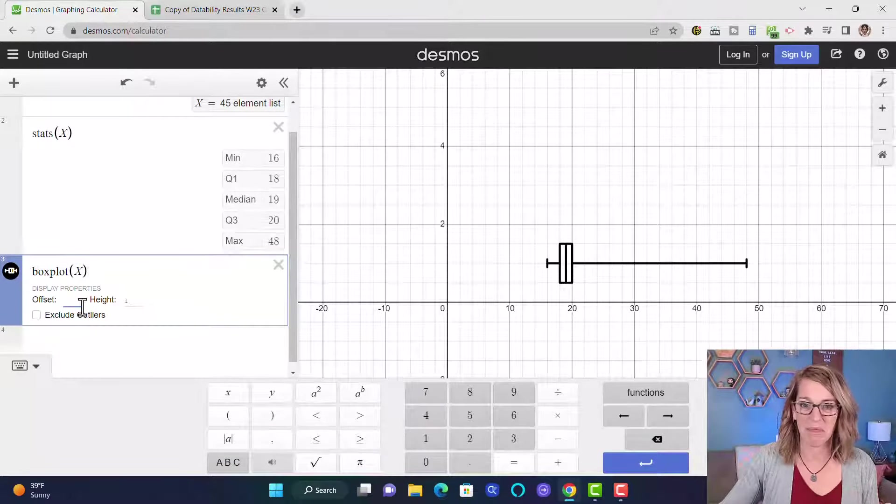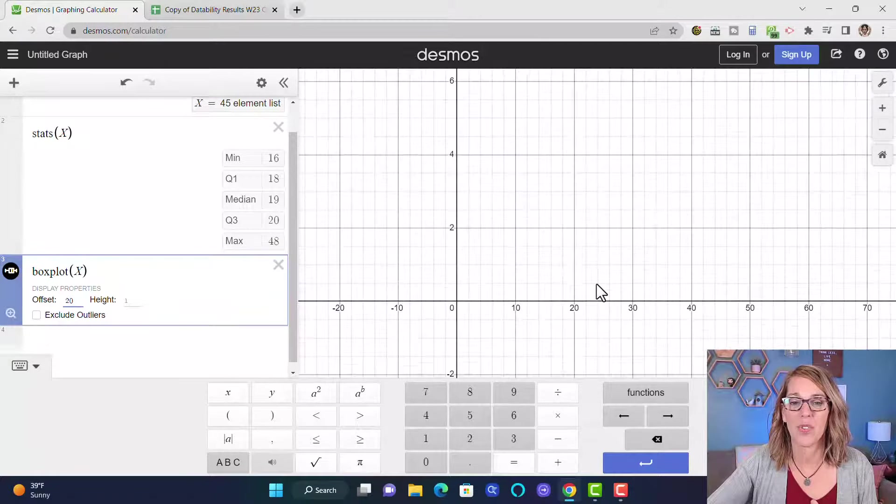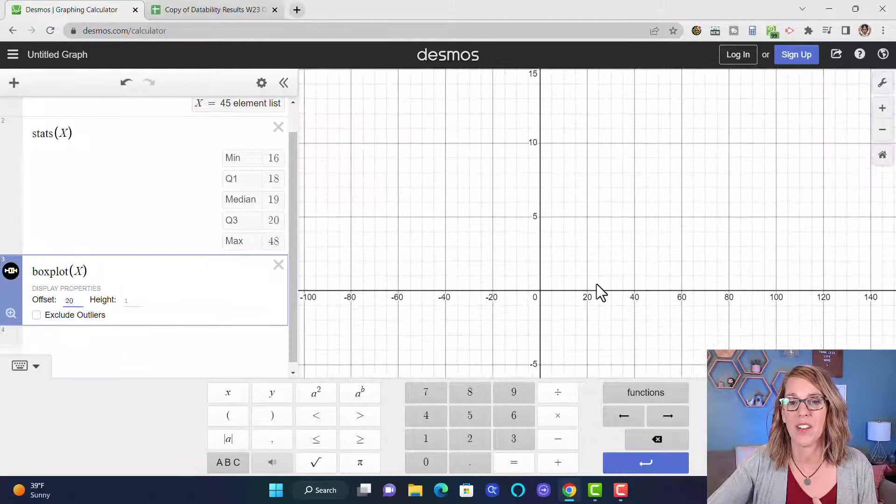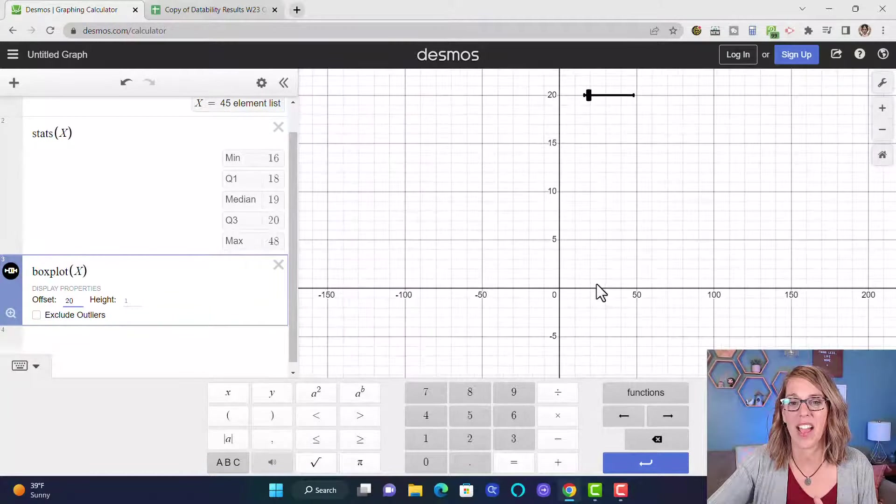So I can go ahead and put this up at, I can put it up at say 20, and then if I scroll up here or scroll out I'll see that way up there at 20.